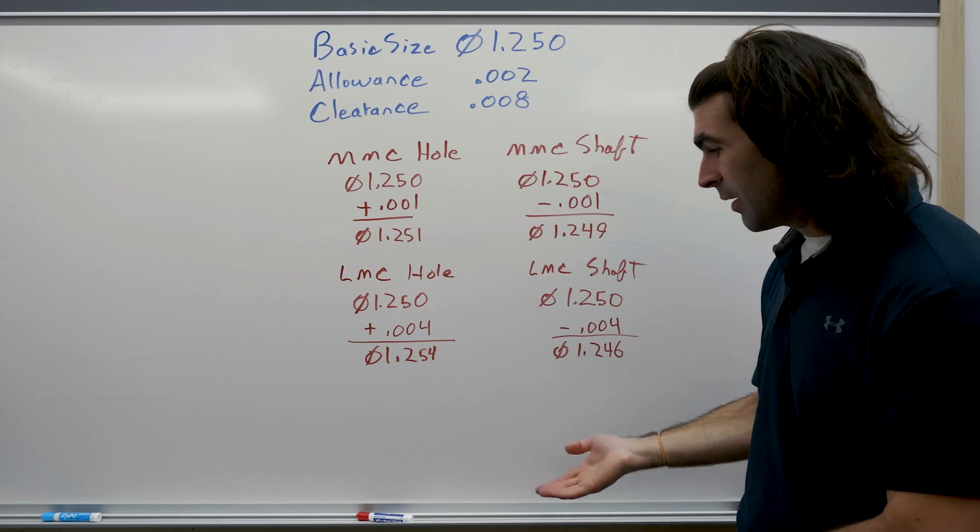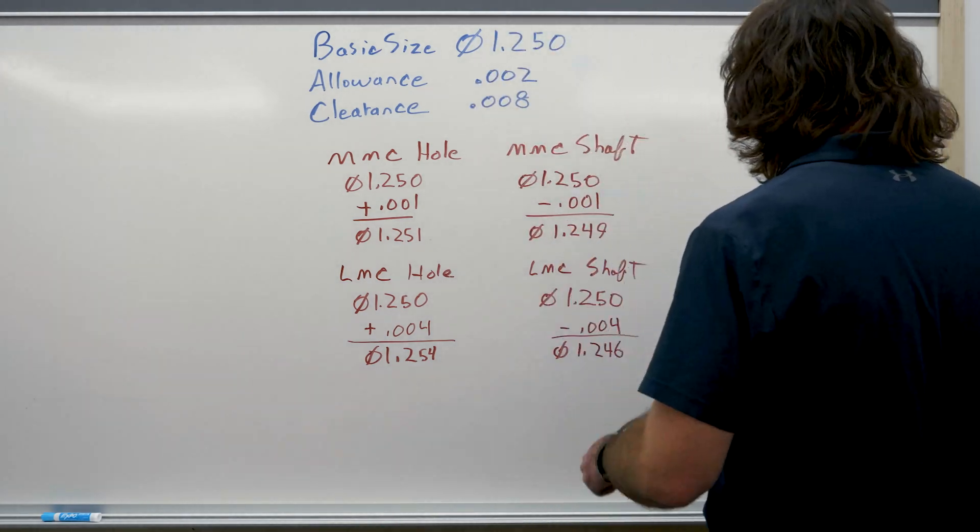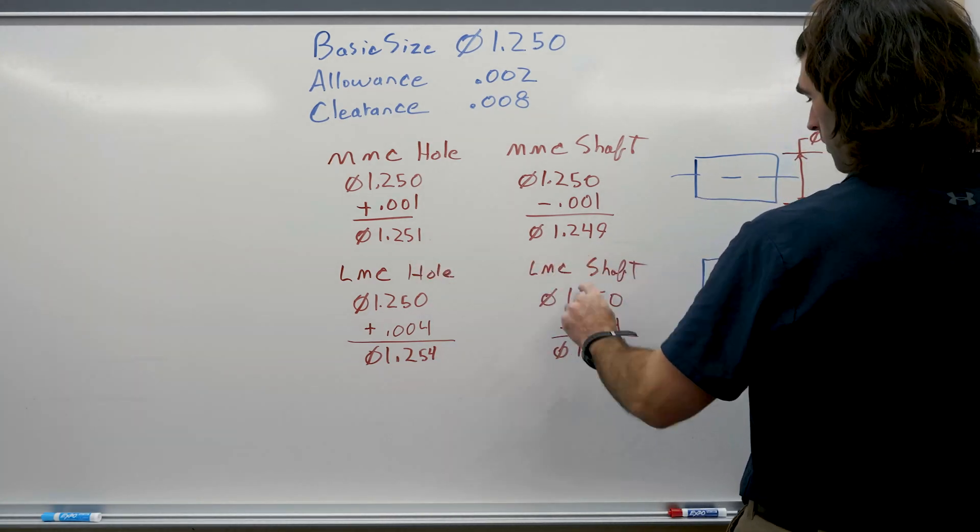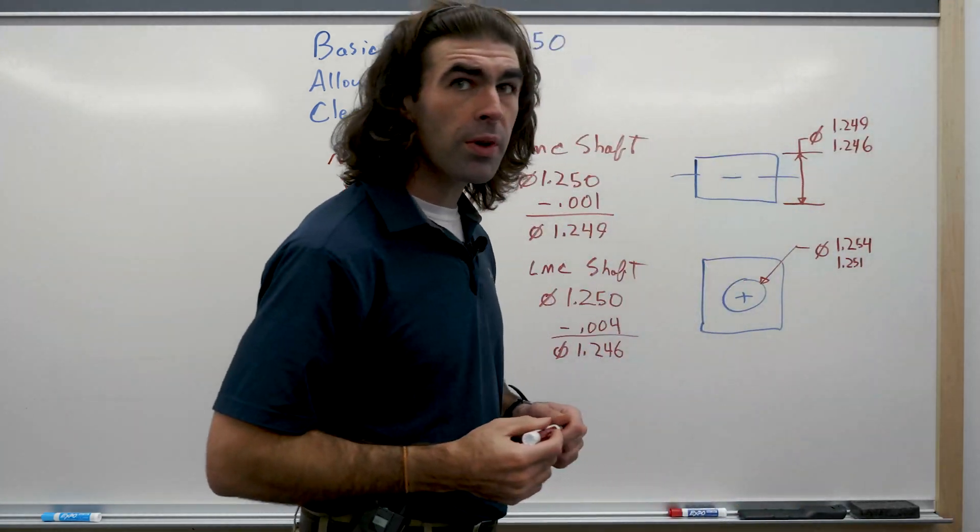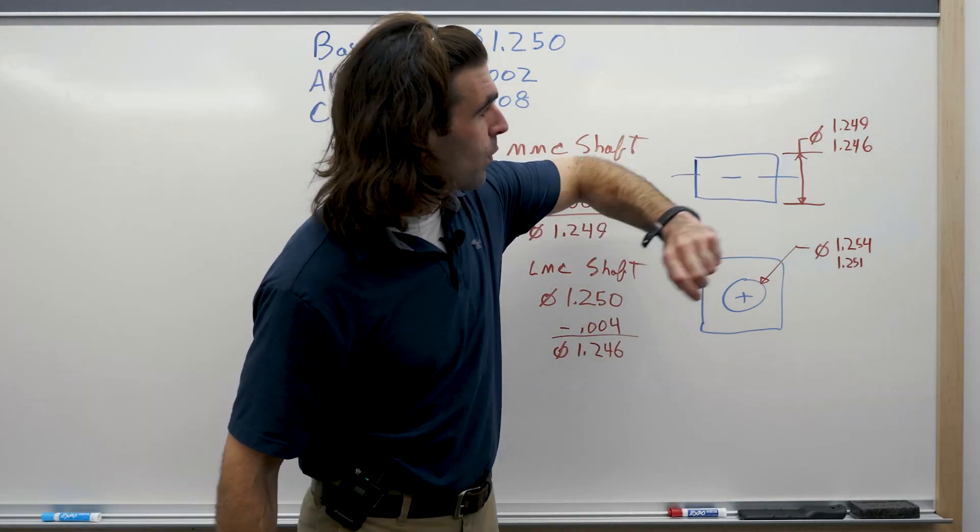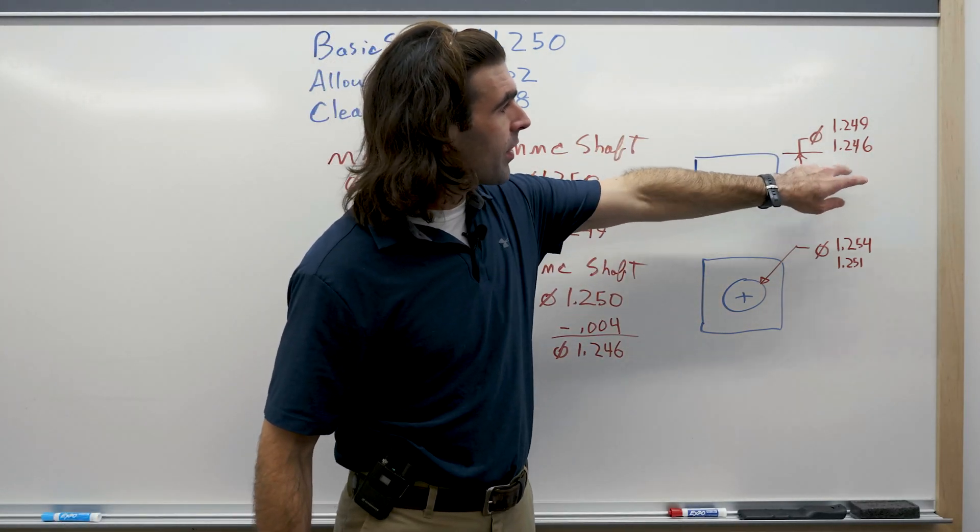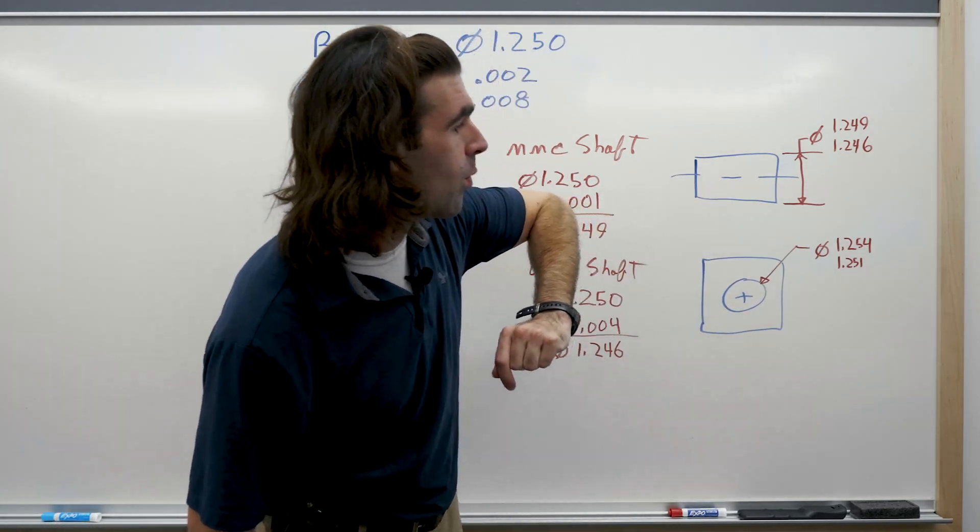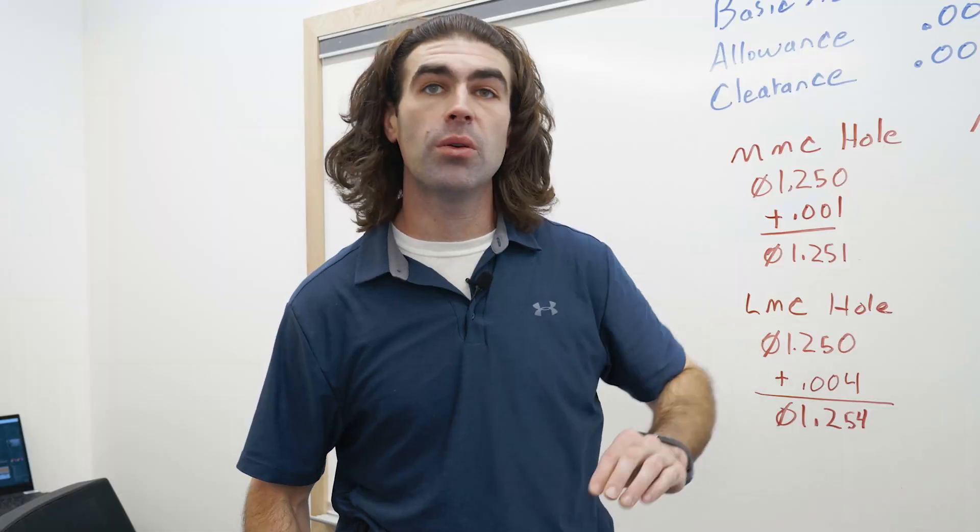So when we dimension the part, it'll look like this. We'll end up with a shaft of a maximum size of 1.249, minimum size of 1.246, a hole 1.254 to 1.251.